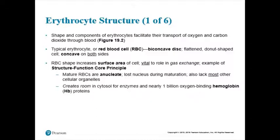Once a red blood cell hits maturity, it spits out the nucleus in preparation to do its job — carry gases. When we talk about red blood cells carrying gases, it's really something inside the red blood cell doing the carrying — a protein called hemoglobin. Hemoglobin is a protein inside your red blood cells that carries oxygen. If you were to cut a red blood cell open, you'd see the biconcave disc shape and inside you'd see the hemoglobin molecules binding to oxygen molecules.